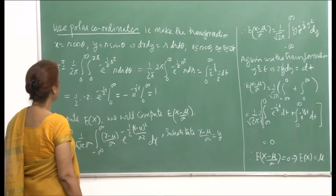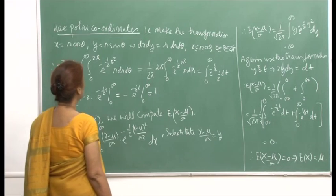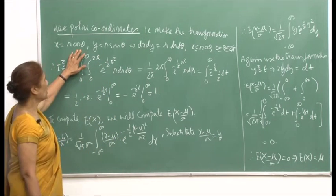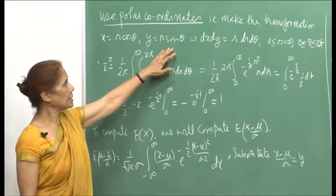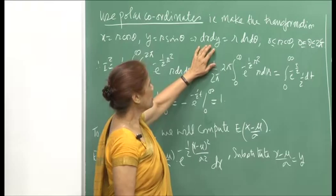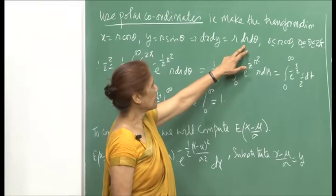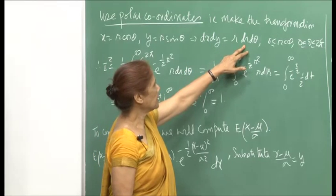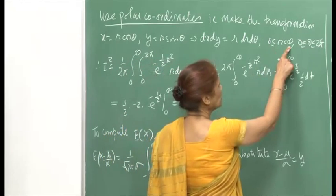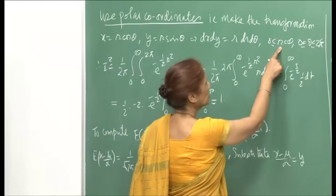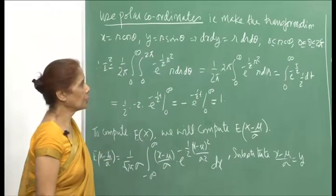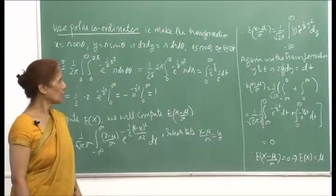To compute that double integral, I make use of polar coordinates, that is I make the transformation x = r cos θ, y = r sin θ. Then we know that dx dy, the element of area in the xy-plane, gets transformed to r dr dθ. Your r varies from 0 to infinity, because r is a non-negative variable, and θ varies from 0 to 2π. This is your polar coordinate transformation.